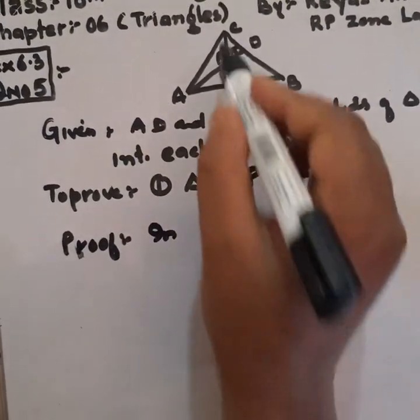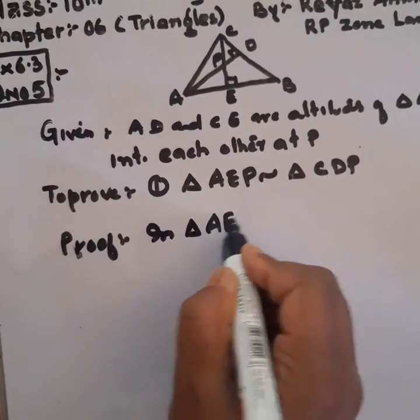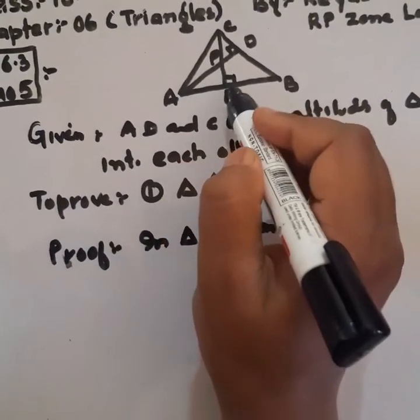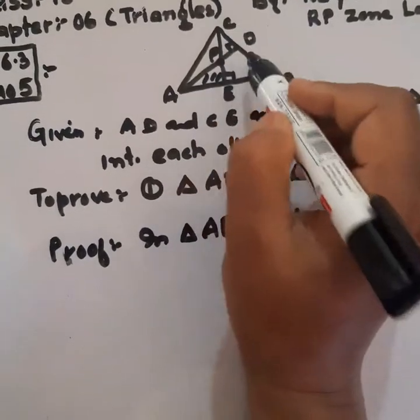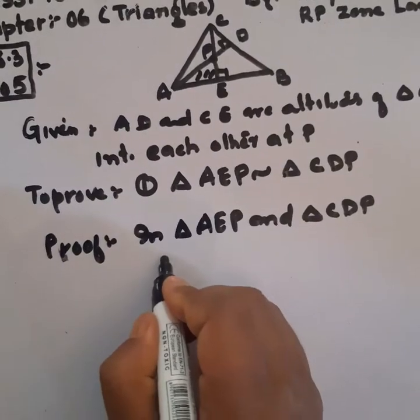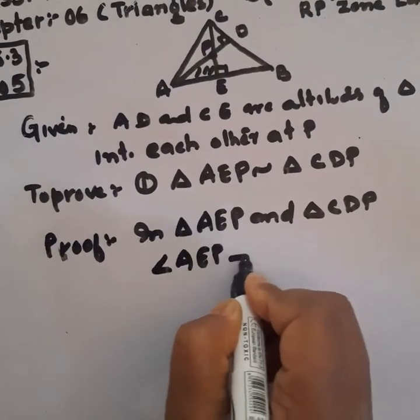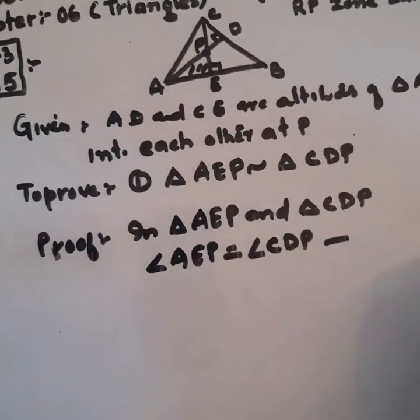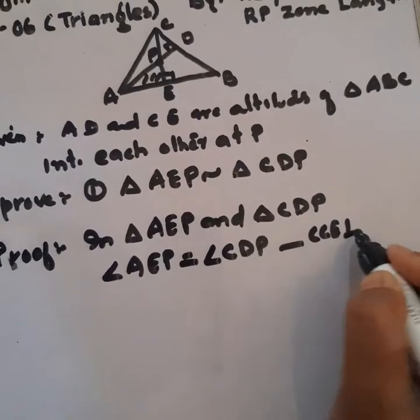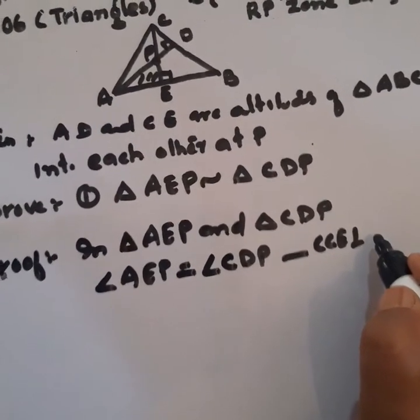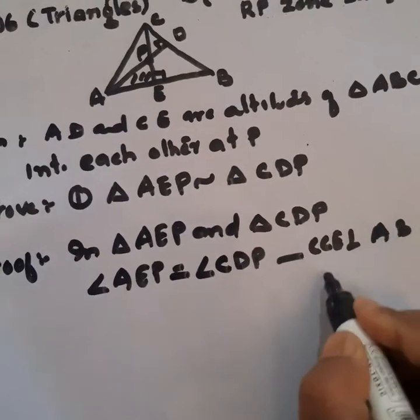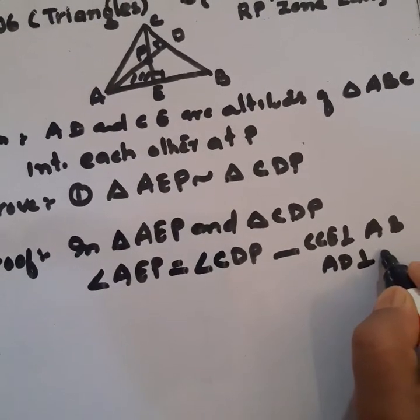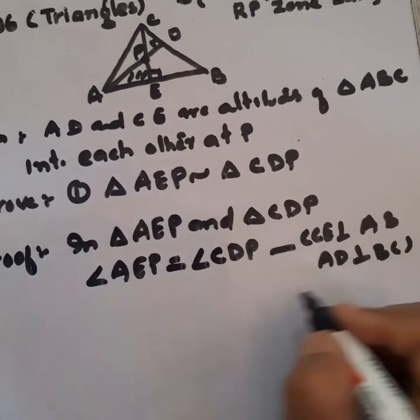In triangle AEP and triangle CDP, angle AEP is equal to angle CDP. Why? Because CE is perpendicular on AB and AD is perpendicular on BC, each 90 degrees.